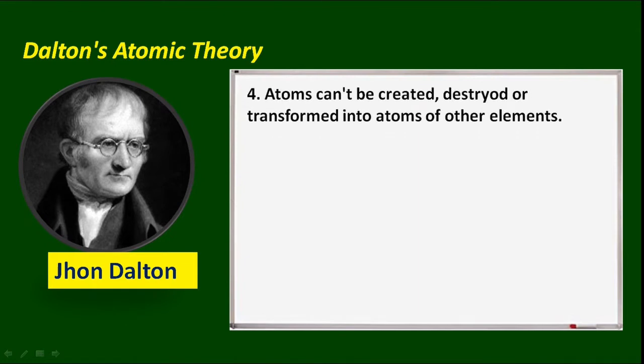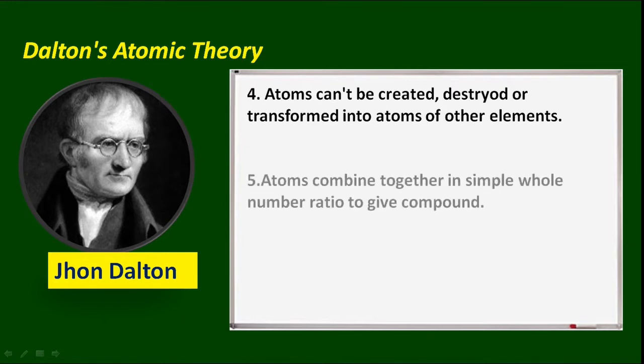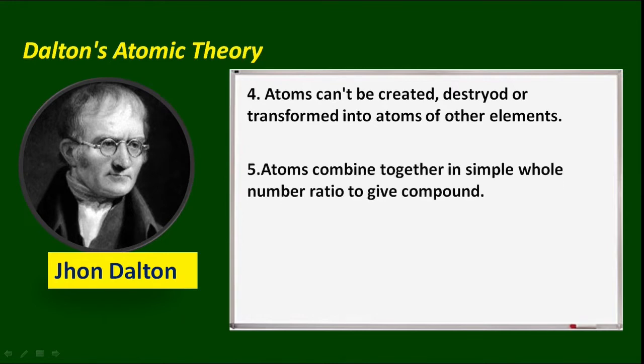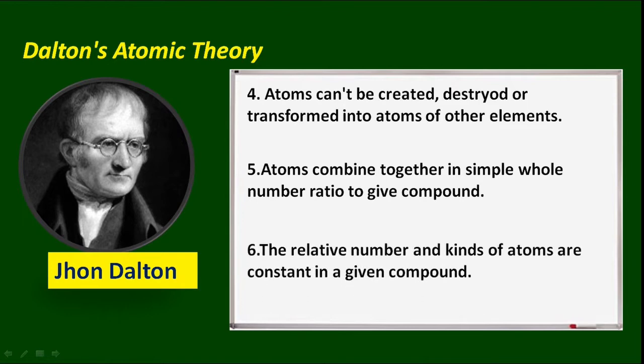Atoms can't be created, destroyed, or transformed into atoms of other elements. Atoms combine together in simple whole number ratios to give a compound. The relative number and kinds of atoms are constant in a given compound.